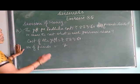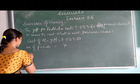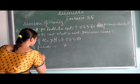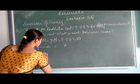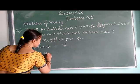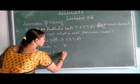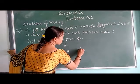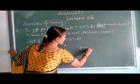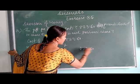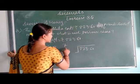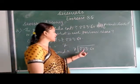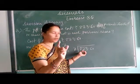So, the share of 1 friend is equal to 523 rupees 60 paise divided by 7 friends. After division we will obtain the share of 1 friend.